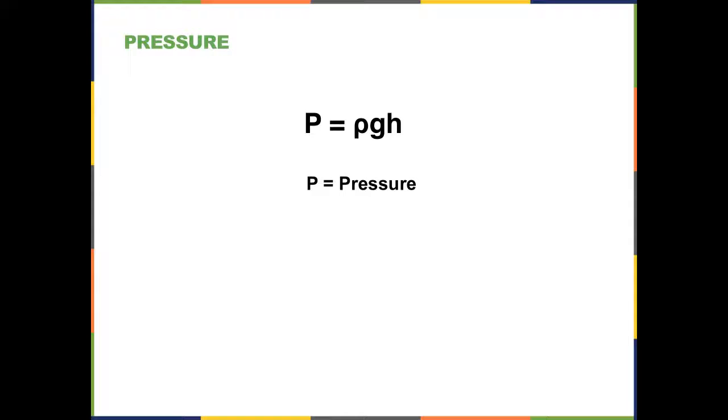So in this case, pressure is equal to the mass density times gravity times the height of the fluid. And we express it this way to allow us to do some additional calculations involving the pressure, density, and height of an amount of fluid.